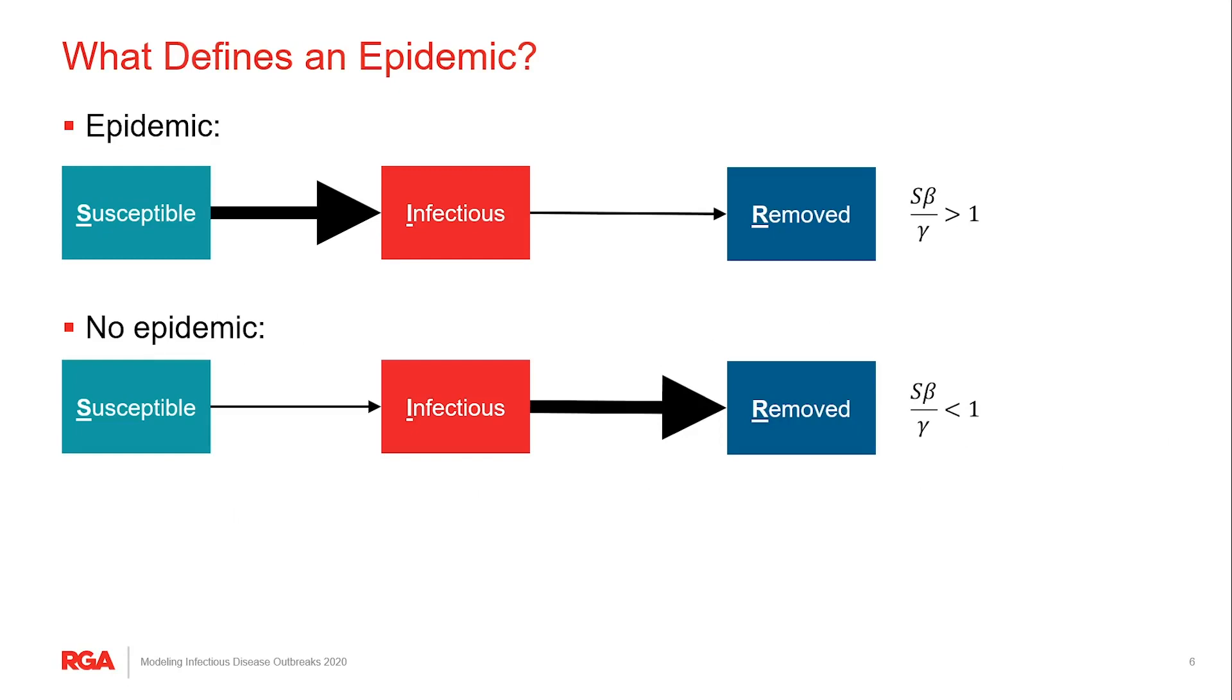So with those transition rates in mind we can mathematically define an epidemic. Anytime you have people being infected faster than they are recovering, you have an epidemic. But anytime people recover faster than they are infected, the epidemic sort of burns itself out. In other words, if the rate going in divided by the rate going out of the infected box is greater than one, there's an epidemic.